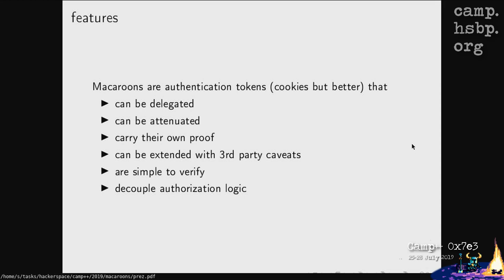Macaroons carry their own proofs — there's nothing extra you need to supply. You can also have third-party caveats, which are limitations that depend on a third party. For example, a macaroon can require you to provide a second macaroon showing you're logged in as a certain user, like Bob on Twitter. Twitter then gives you a macaroon certifying you're logged in as Bob, and in this way you can say only the Twitter user Bob can see this picture.